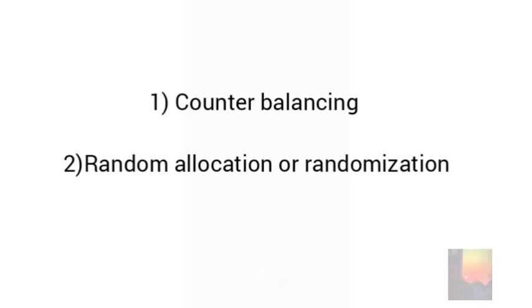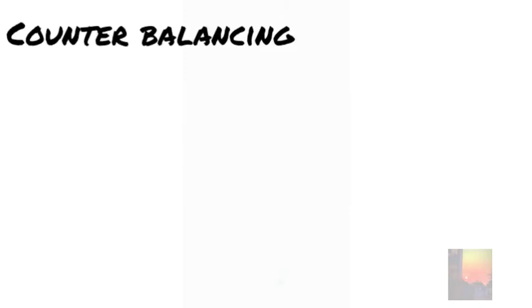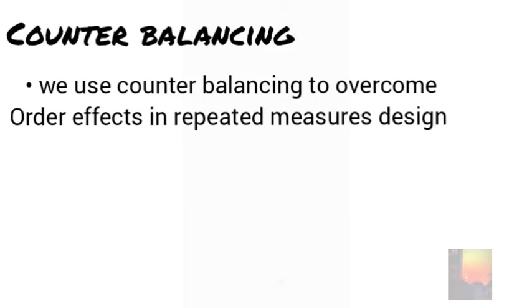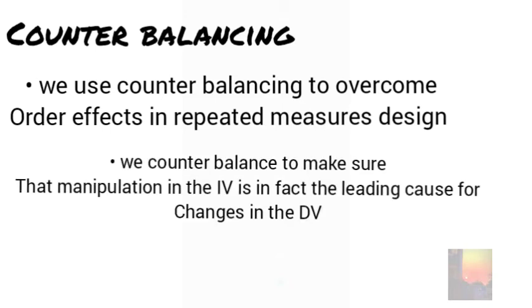So in this lecture we are going to be learning about counterbalancing and random allocation. So what is counterbalancing? Basically we use counterbalancing to overcome order effects in repeated measure design. Counterbalancing is a way to test whether the independent variable is actually causing the change in the DV.